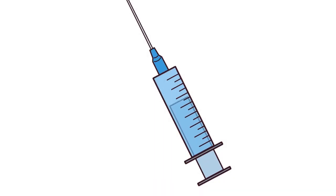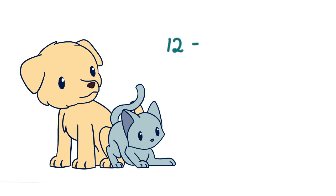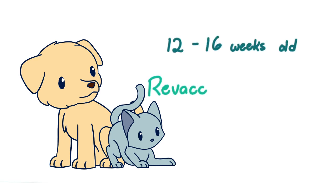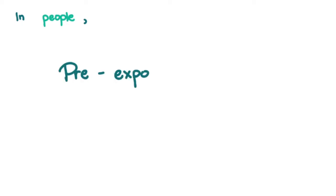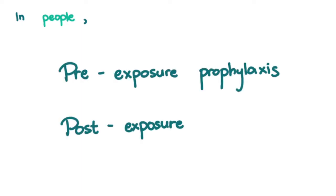Once signs and symptoms show, there's nothing you can do to treat rabies — we can only try to prevent it. Fortunately, the rabies vaccine exists. Dogs and cats are vaccinated against rabies at 12 to 16 weeks old, then revaccinated annually or every 3 years depending on local guidelines. In people, vaccination and all other preventive steps can be divided into two categories: pre-exposure prophylaxis and post-exposure prophylaxis.